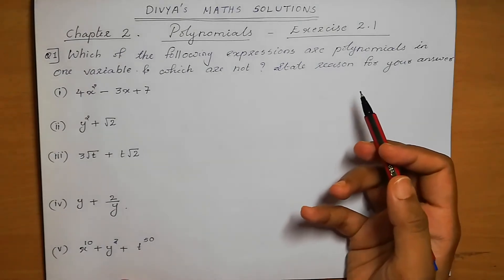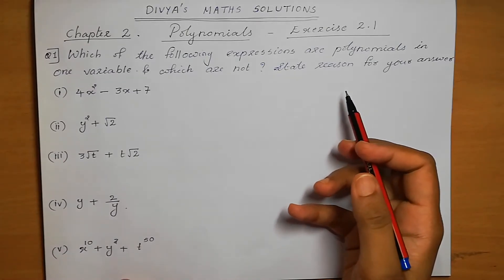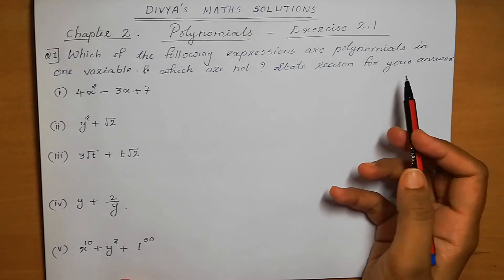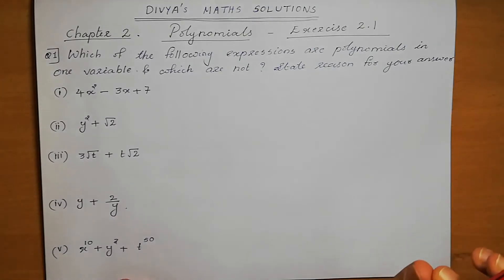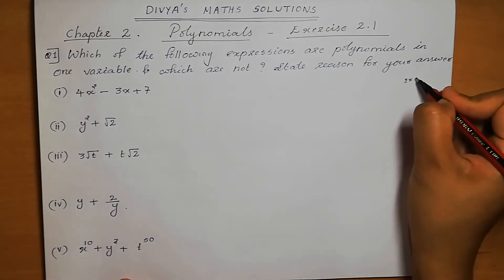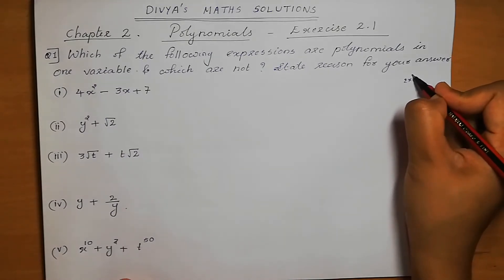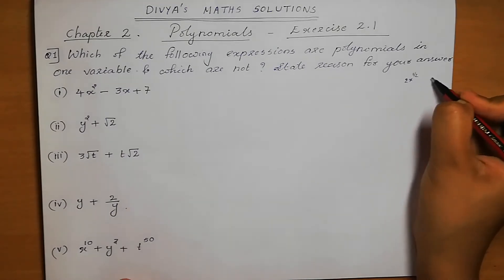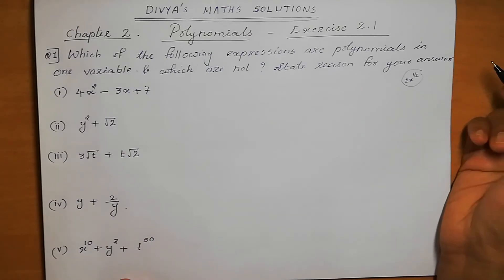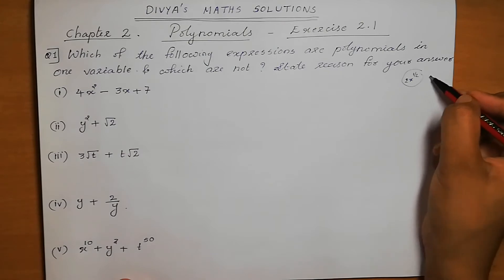So what is a polynomial? Special types of algebraic expressions are called polynomials. The only condition is that the degree of a polynomial is always a whole number. If it is a fraction, that is not a polynomial.